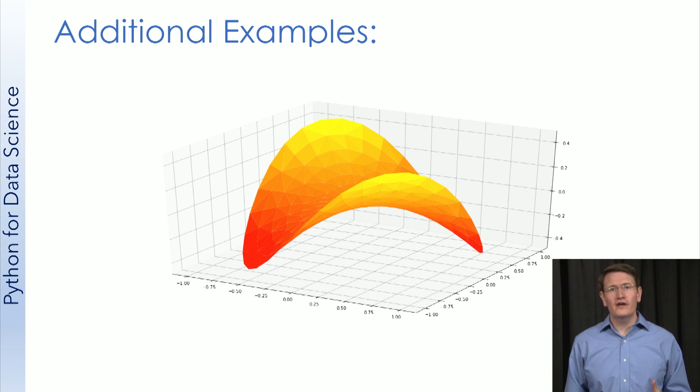In our additional notebook, we provide code for a number of examples. Still working with the world development indicators, we pick random indicators and compare them against each other using line plots and scatter plots. Then after working with the world development indicators, we also provide an example of how to create 3D plots like this in matplotlib.